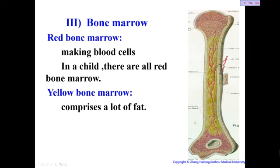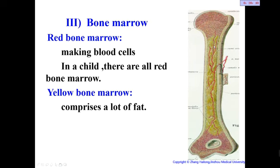The third structure is bone marrow. The medullary cavity of the long bone is filled with bone marrow, which has two types: red bone marrow and yellow bone marrow. Red bone marrow can produce blood cells. In a child, all the medullary cavity is filled with red bone marrow. In an adult, the shaft portion is replaced by yellow bone marrow — which is replaced by fatty tissue — and can no longer produce blood cells.